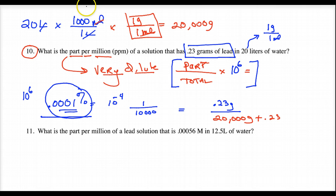If this is the water, you have to add the solute, so part over total, total mass of the solution. Now, instead of timesing it by 100, you times it by a million.